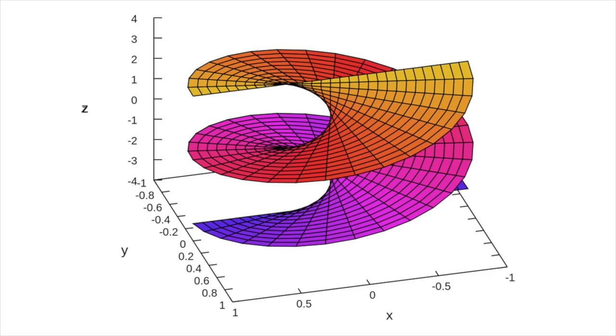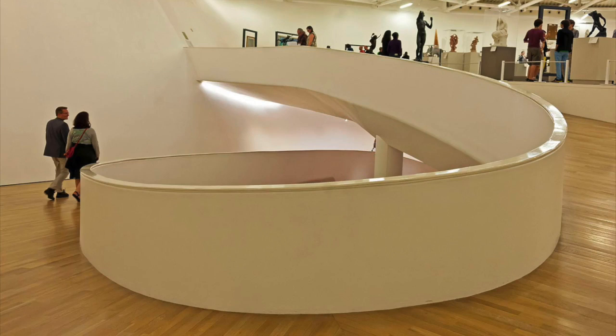The helicoid is the only minimal surface, apart from the simple plane, that's also a ruled surface. That is, a surface that's built up from an infinite number of perfectly straight lines. The helicoid is the surface swept out by a line that always intersects a fixed axis at right angles, and that rotates uniformly as its point of intersection moves uniformly along the axis. This line intersects any cylinder concentric with the axis in a helix.